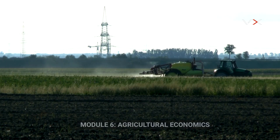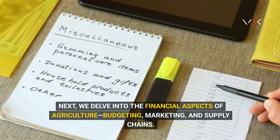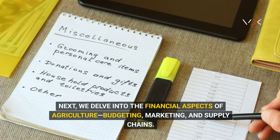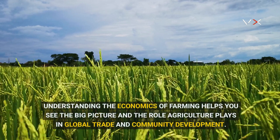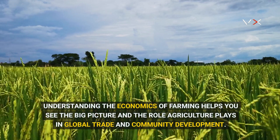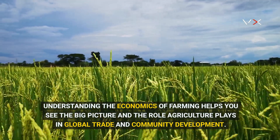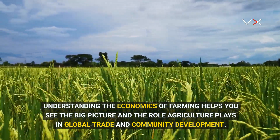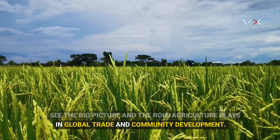Module 6: Agricultural Economics. We delve into the financial aspects of agriculture — budgeting, marketing, and supply chains. Understanding the economics of farming helps you see the big picture and the role agriculture plays in global trade and community development.